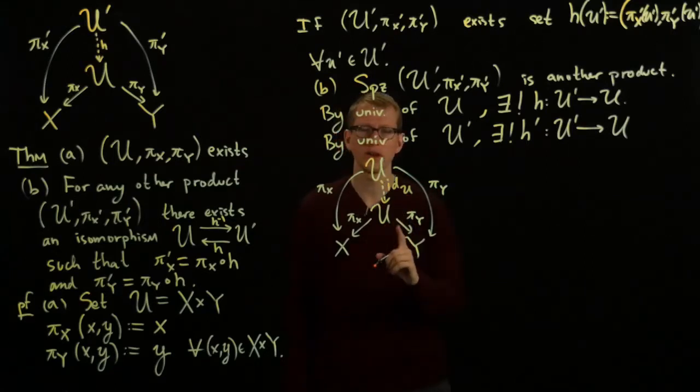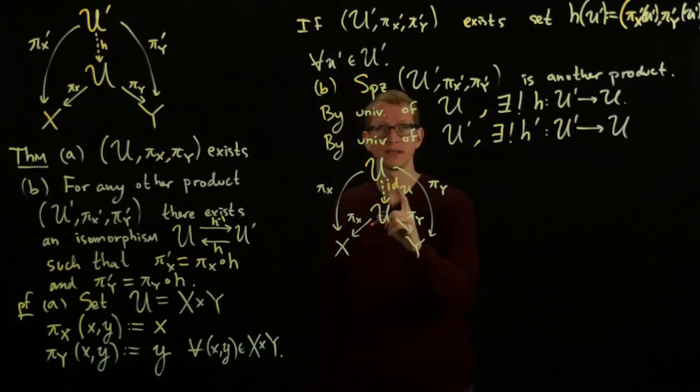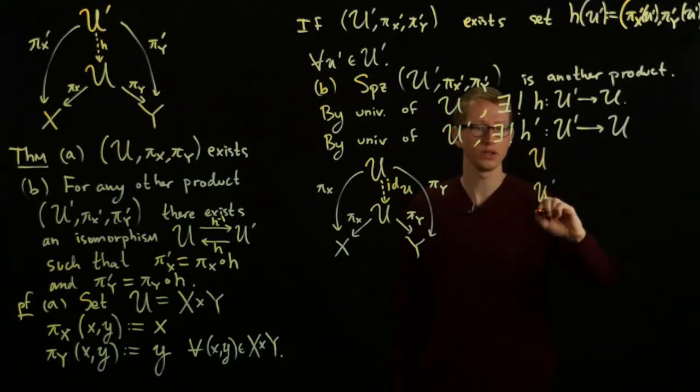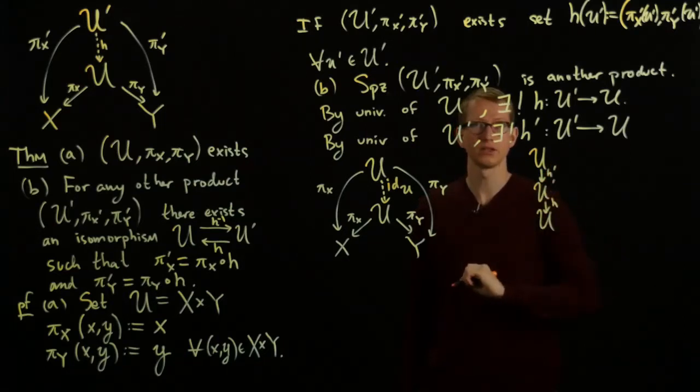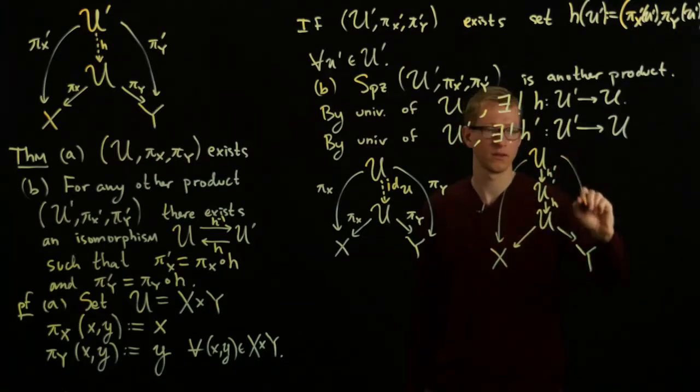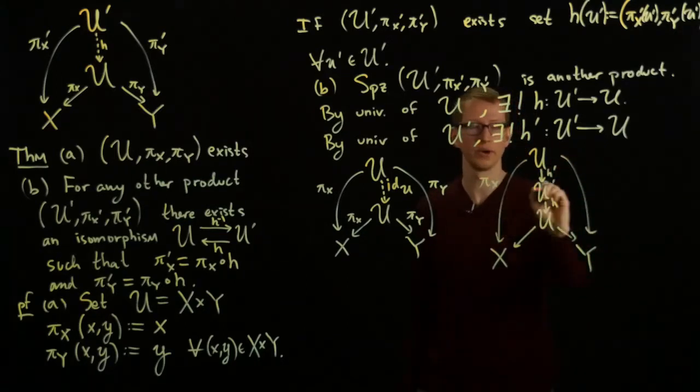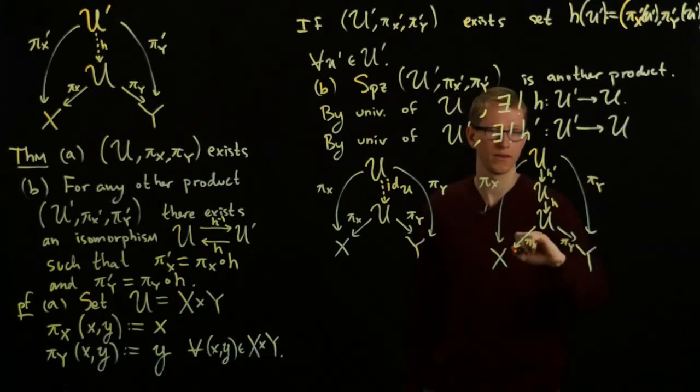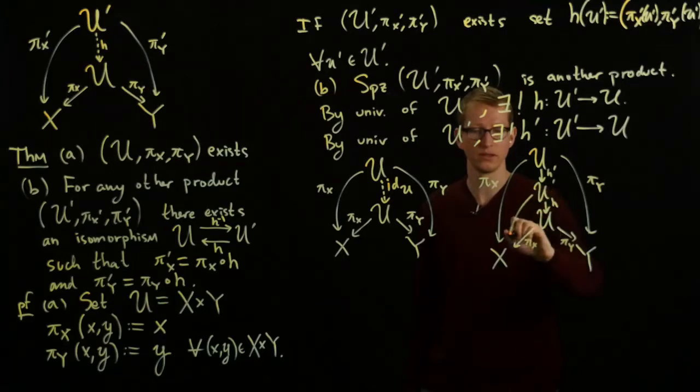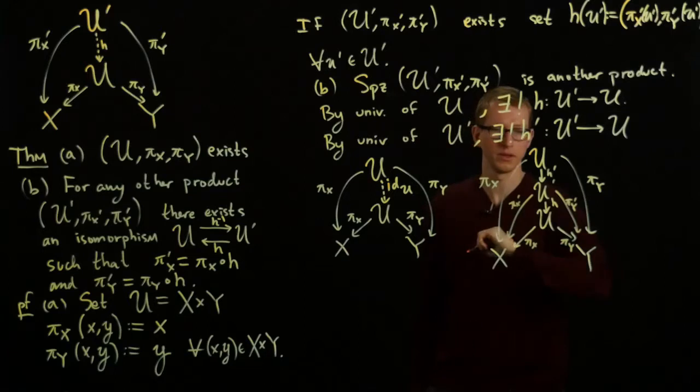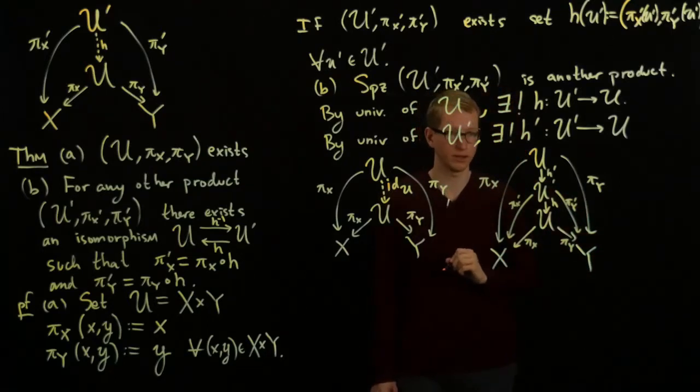But, we also have another map that satisfies exactly the same condition. What is it? We can go through U prime by using H prime and H. Right? Here we have πX. Here we have πY. And let's even draw these in here as well. πX prime, πY prime. Now you can see why I needed to draw another picture, because it gets a little cluttered. And we know that this, everything here commutes.